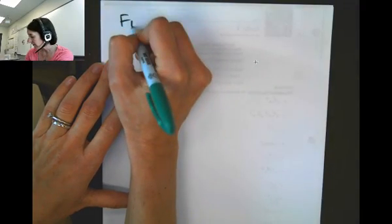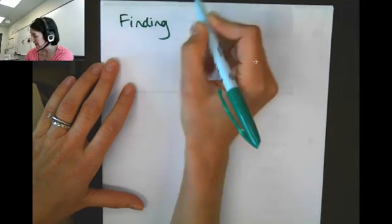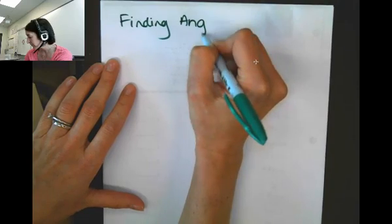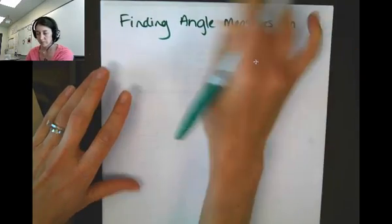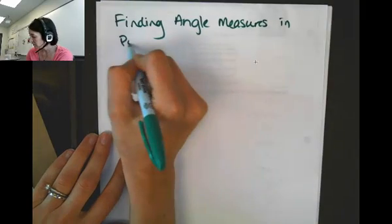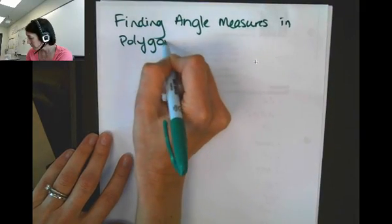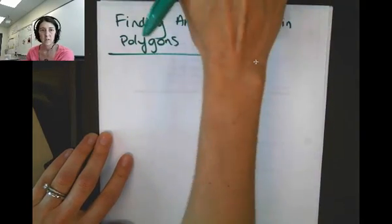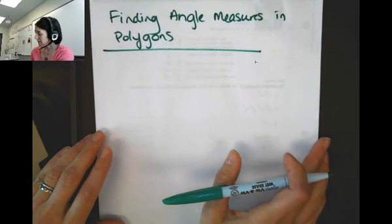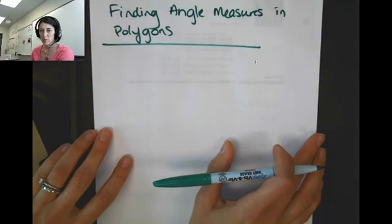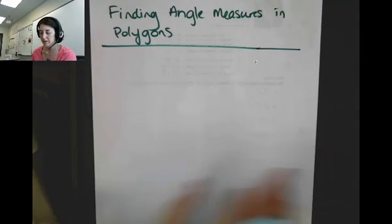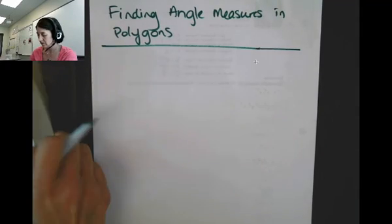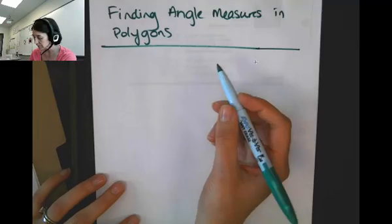We're going to talk today about finding angle measures in polygons. So hopefully you looked at the activity that we assigned before this. You probably already figured this out on your own and discovered this, but if not, let's put it out here.